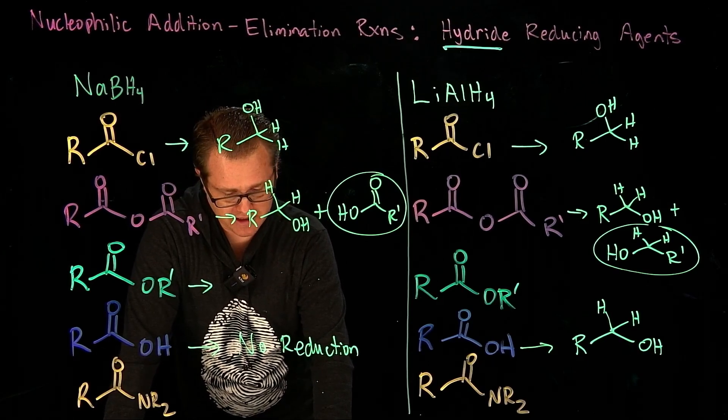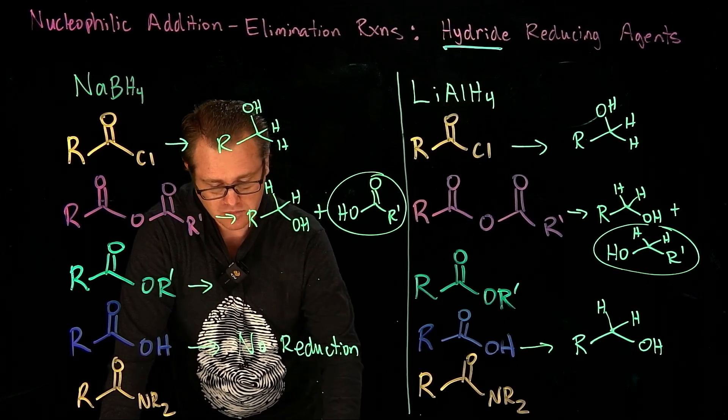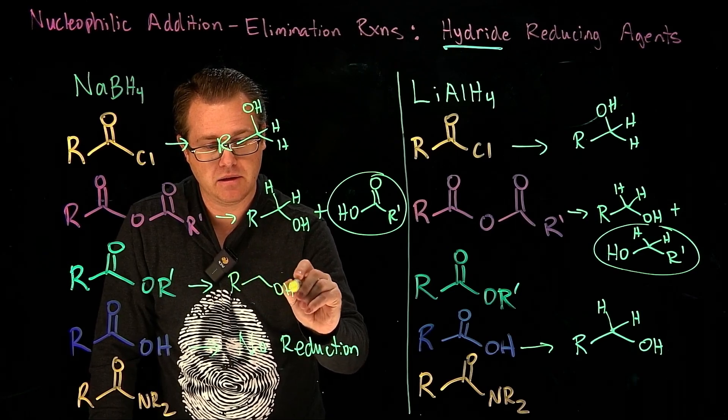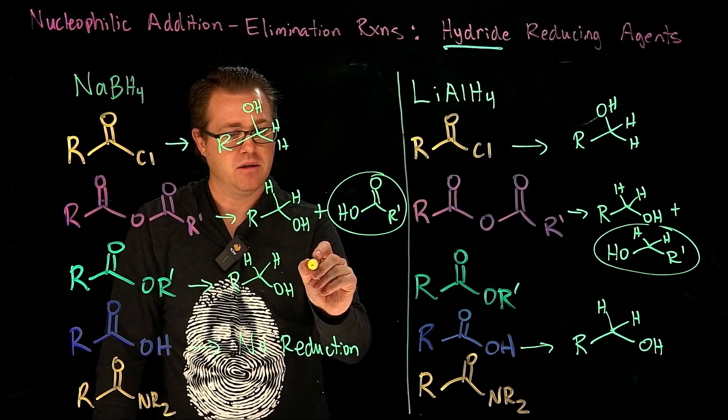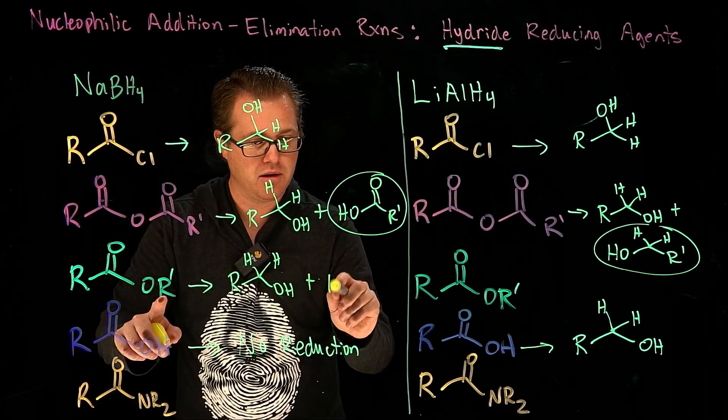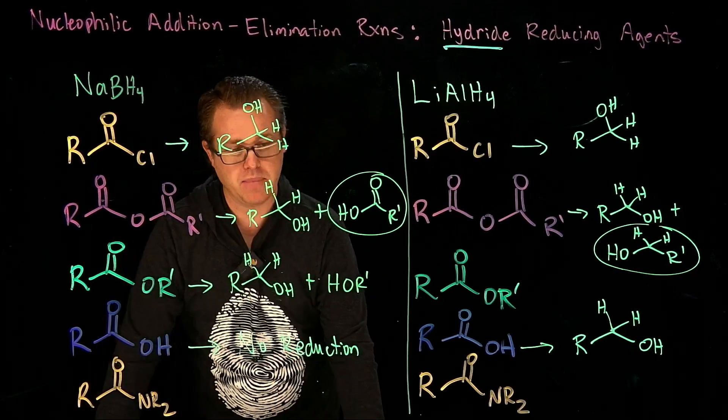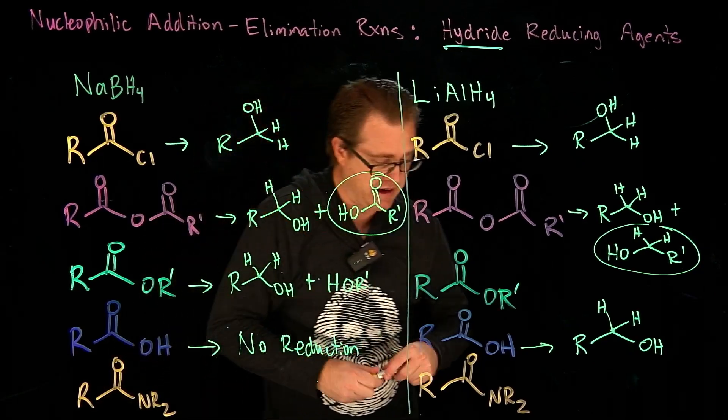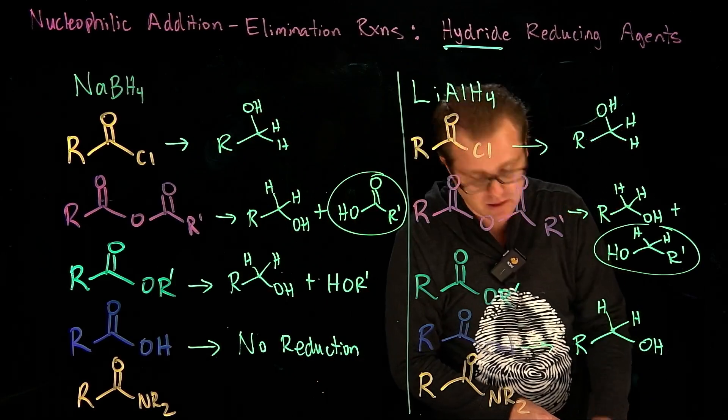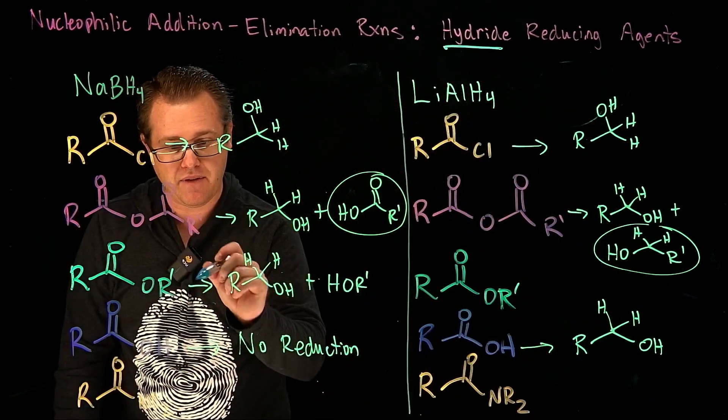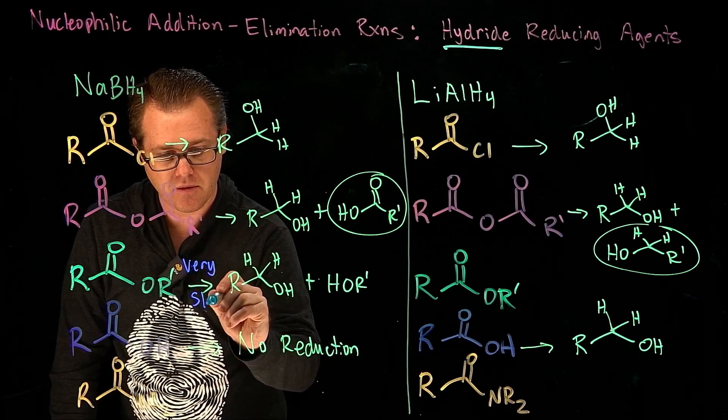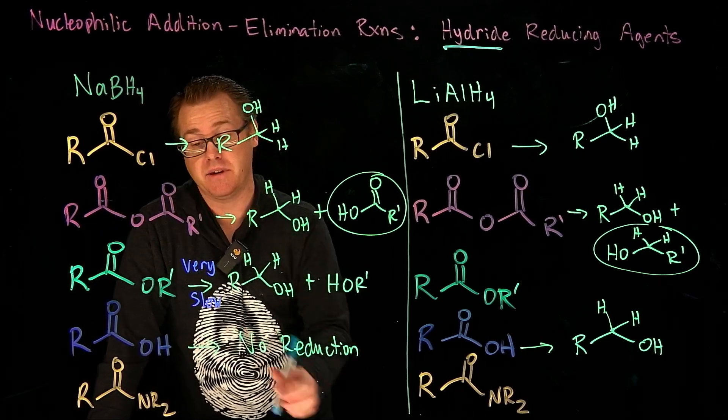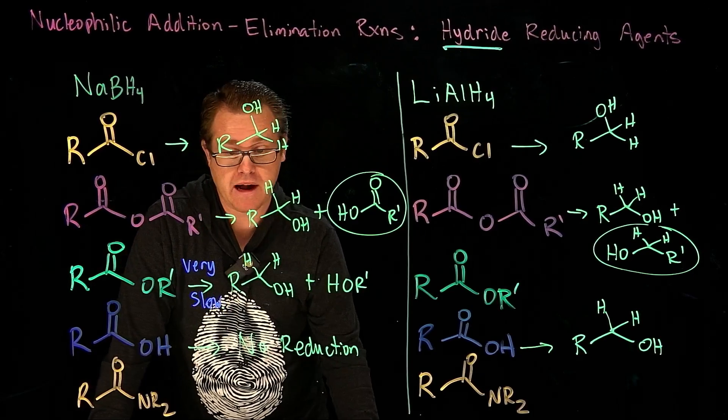Now what about our esters here? What's going to happen with esters? If we do that with lithium aluminum hydride, we are going to generate two alcohols. We're going to have this one, where we added the two hydrogens there, plus this piece right here is going to be an alcohol. So we get two alcohols. But we have to make sure we understand this concept - that with sodium borohydride, this is very very slow.